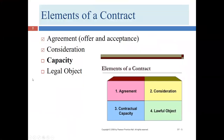We've covered agreement — which includes offer and acceptance — and consideration. Now we're ready for the third element, capacity, and the fourth element, legal object.